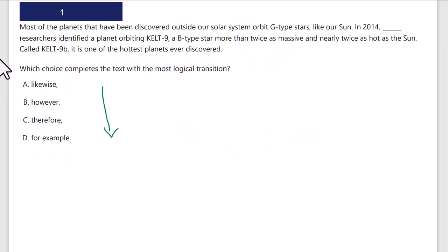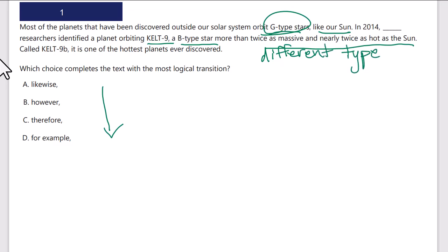I'm going to read the whole text. I might scan the answer choices just to see if there are any unusual transition words — I have 'likewise' (comparison), 'however' (contrasting), 'therefore' (cause and effect), 'for example' (illustrative). Most planets discovered outside our solar system orbit G-type stars like our sun. In 2014, researchers identified a planet orbiting Kelt-9, a B-type star more than twice as massive and nearly twice as hot as the sun. Called Kelt-9b, it's one of the hottest planets ever discovered. So this is an exception — usually planets orbit G-type stars, so I need something that denotes a contrast.